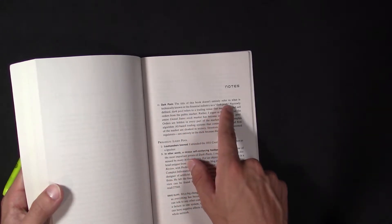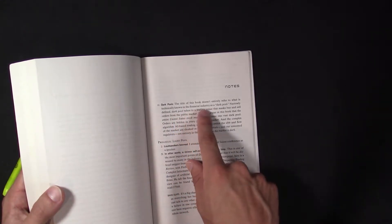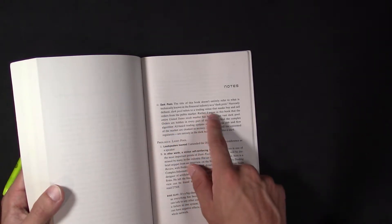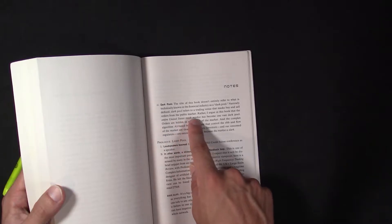The title of this book does not entirely refer to what is technically known in the financial industry as a dark pool. Narrowly defined, dark pool refers to a trading revenue that mass buy and sell orders from the public market.